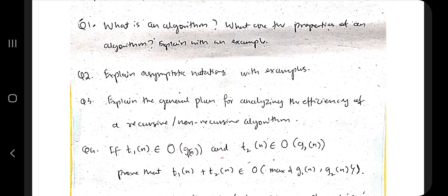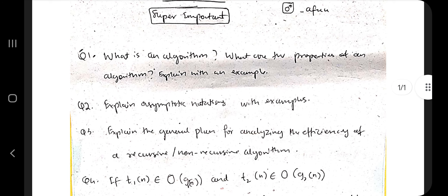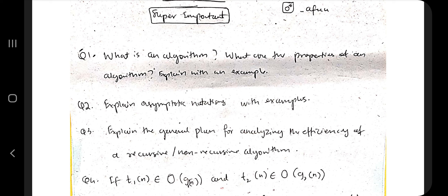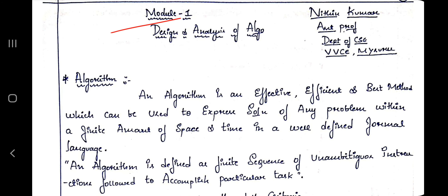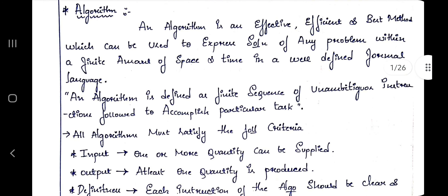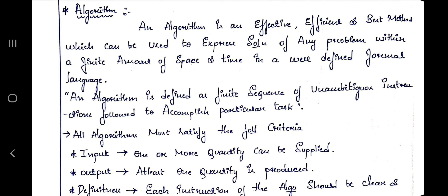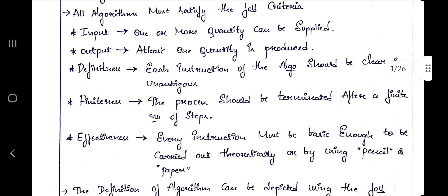The first question is: what is an algorithm, what are the properties of an algorithm, explain with an example. This is the Module 1 note, which I'll be uploading in the same link in the description box. I'm just explaining what are the key points you need to mention and where the answers are presented.